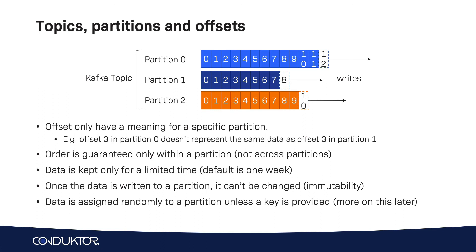Also, if you don't provide a key — and we'll see this about keys and producers — if you don't provide a key to your message, then when you send a message to a Kafka topic, the data is going to be assigned to a random partition. Finally, a topic can have as many partitions as you want, but it is common to have topics with say 10, 20, or 30 partitions, over a hundred perhaps, but over a thousand, probably not, unless you have a truly high throughput topic.